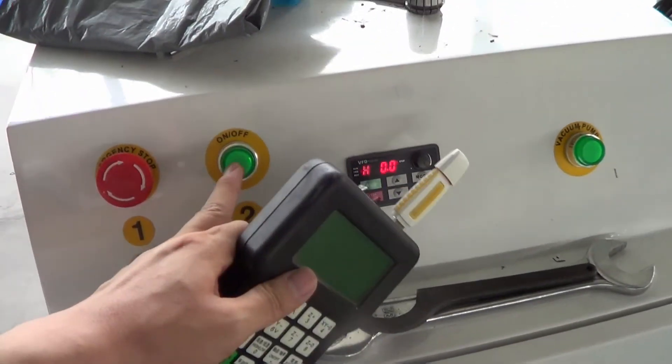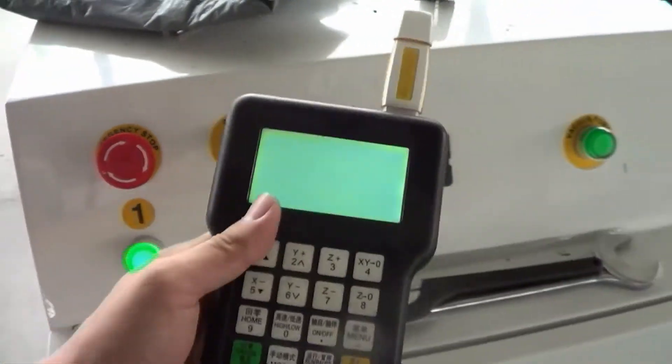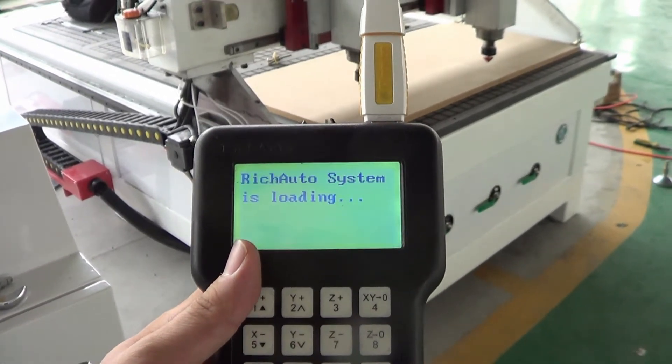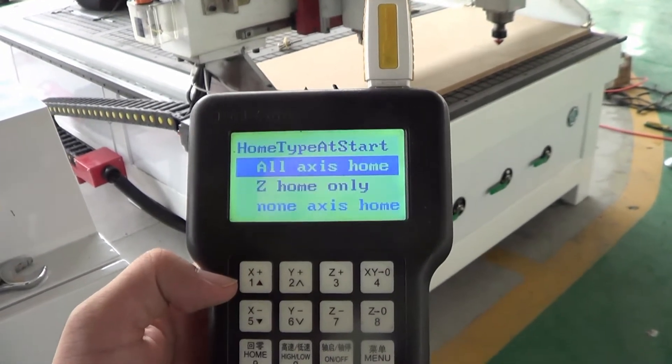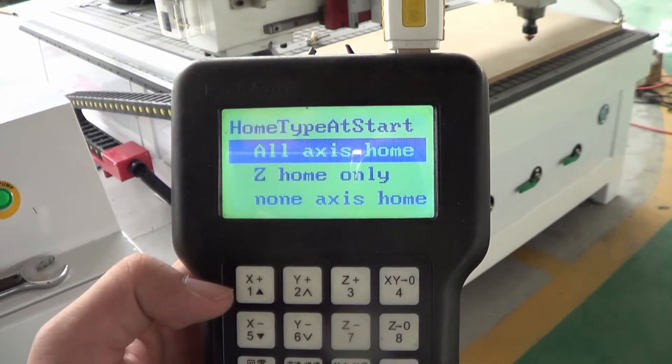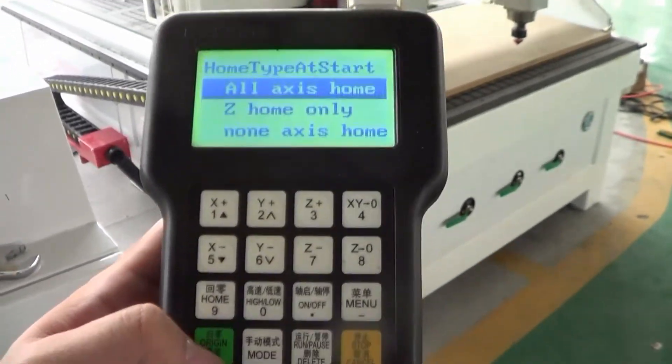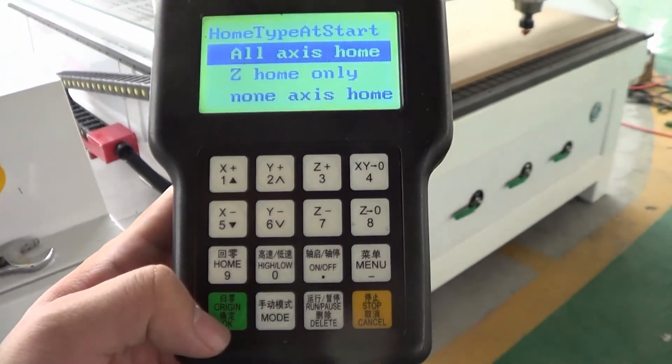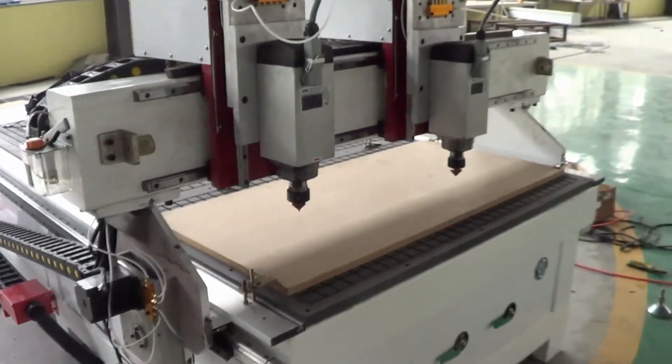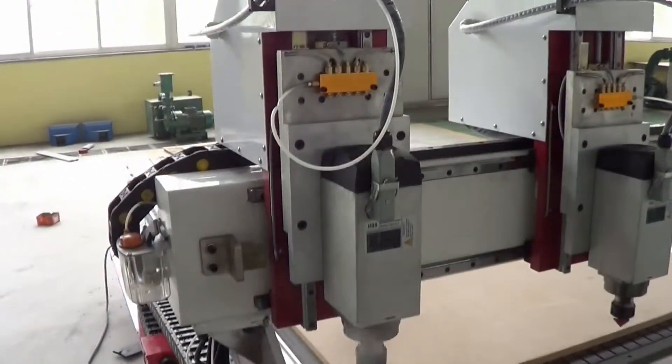First we power on the machine by pressing this button, and then on the screen the system starts. When it's finished starting, it will ask you whether to home all the axes. Here we choose all axis home and press OK button, and the machine starts to move to the bottom left corner and the Z to the top.